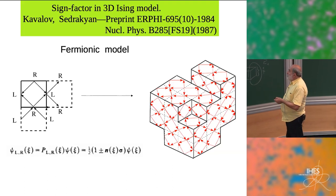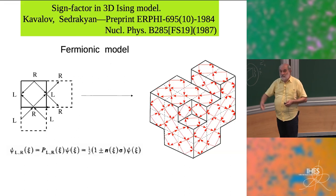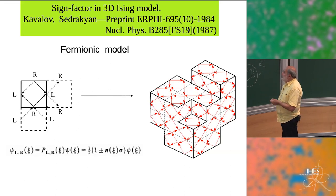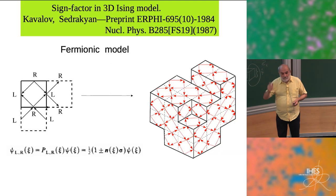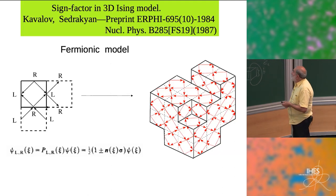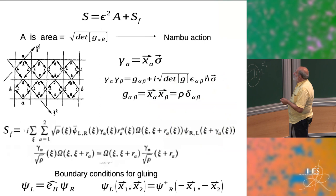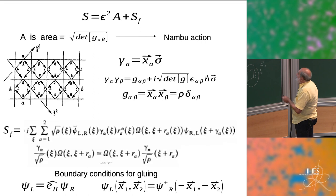I put in error points. The normal on each plaquette is defined well, and I can put in left and right fermions according to this prescription — plus and minus, left and right.